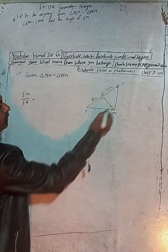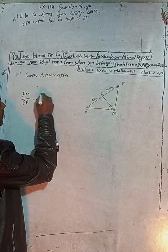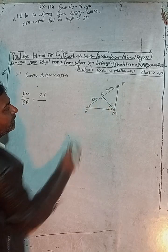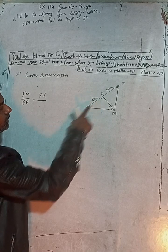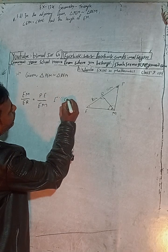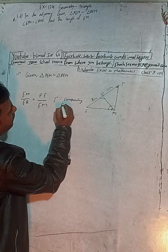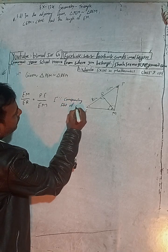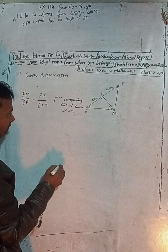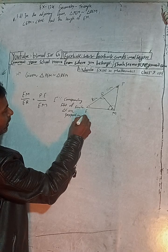So our step is to take the bigger triangle. PE is given here, so PE divided by EM — and this dotted angle I told you is equal to the other angle — so the corresponding side is EM. Now we can write the proportion: corresponding sides of similar triangles are proportional.